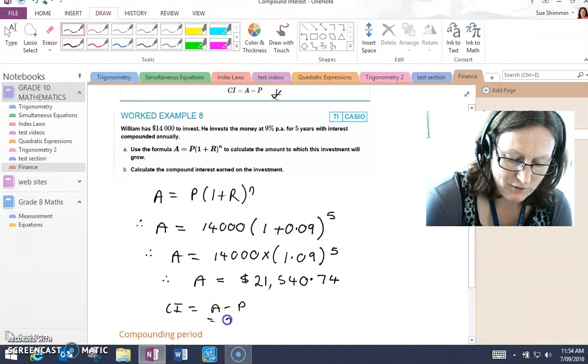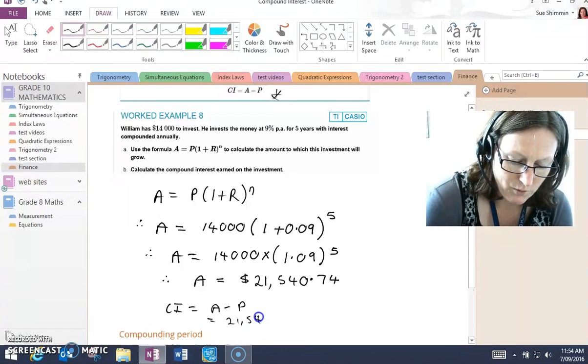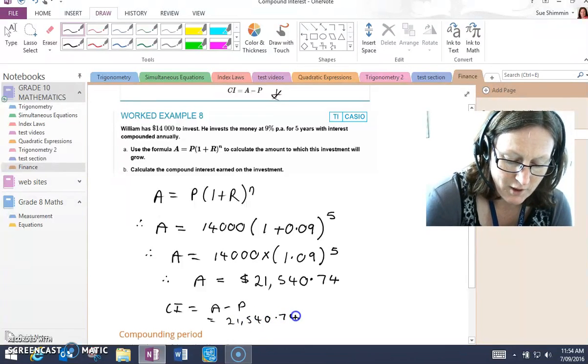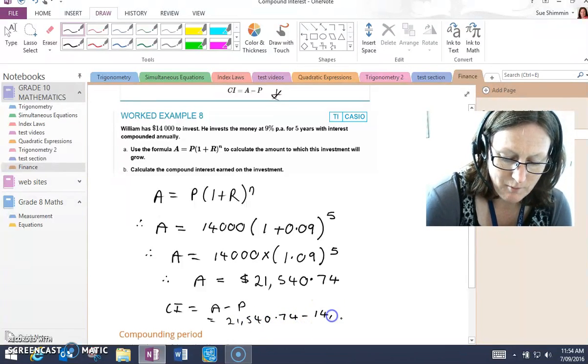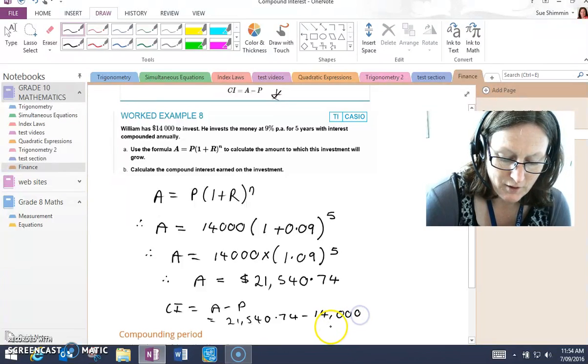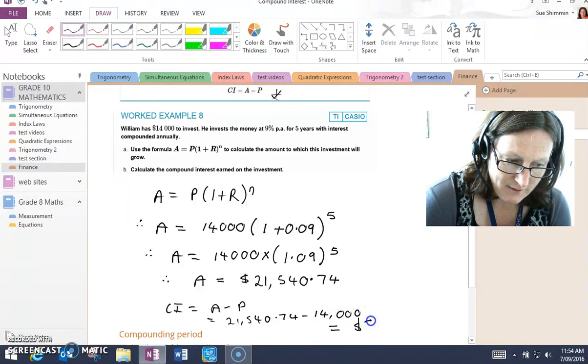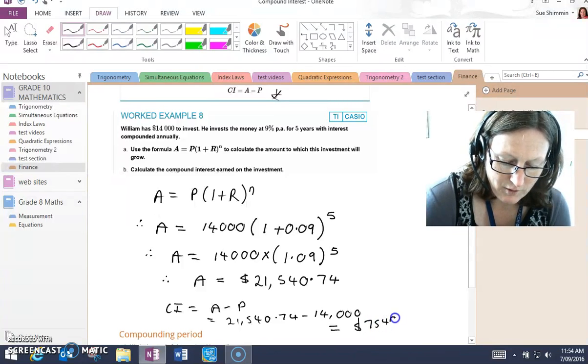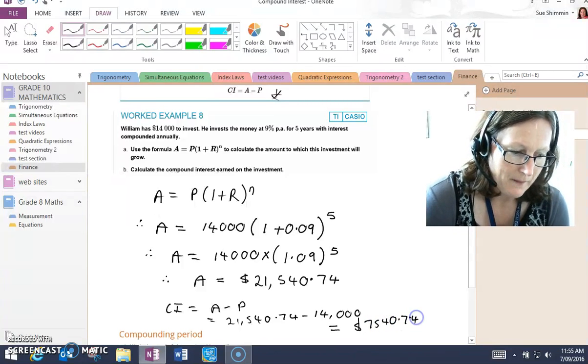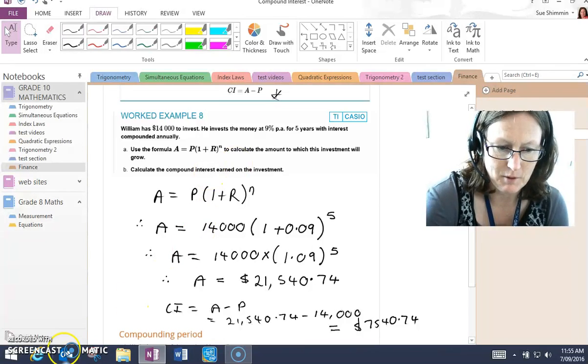A was $21,540.74. P being the principal, the amount William started with. So $7,540.74 is the compound interest that has been earned.